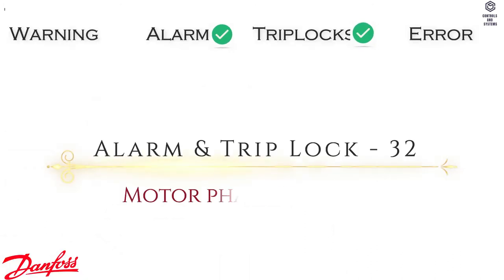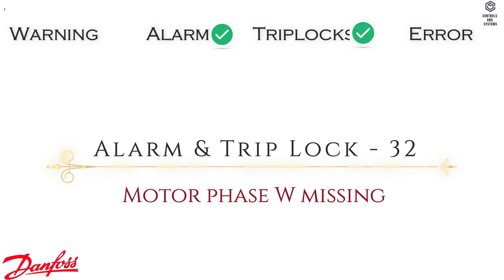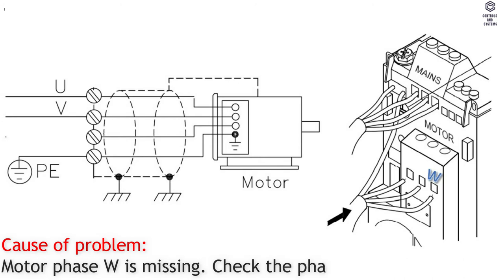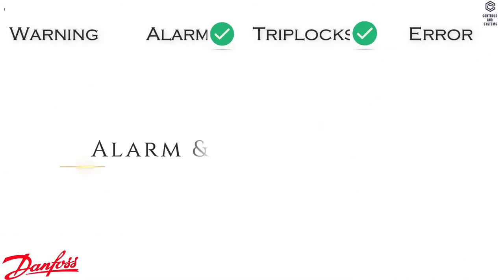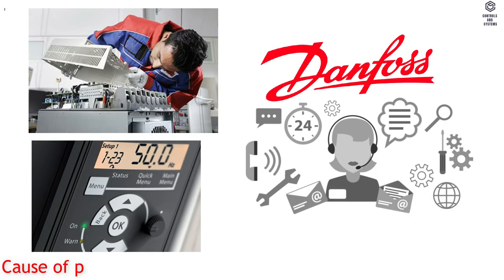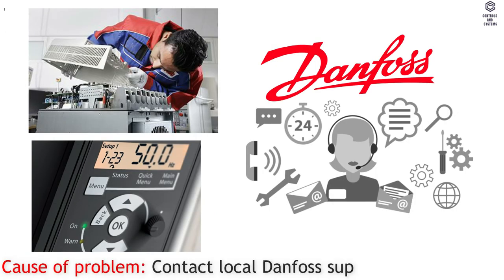Alarm and Trip Lock 32: Motor Phase W Missing. Cause of Problem — motor phase W is missing. Check the phase. Alarm and Trip Lock 38: Internal Fault. Cause of Problem — contact local Danfoss supplier.